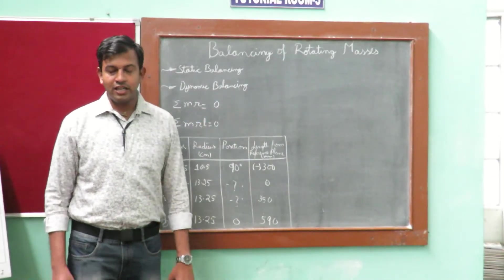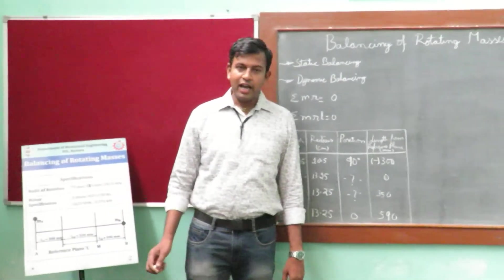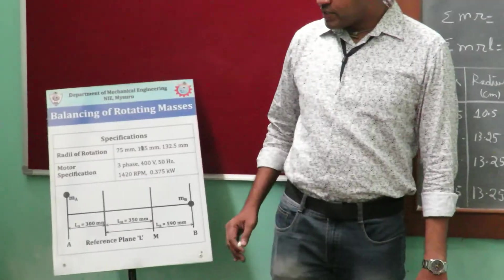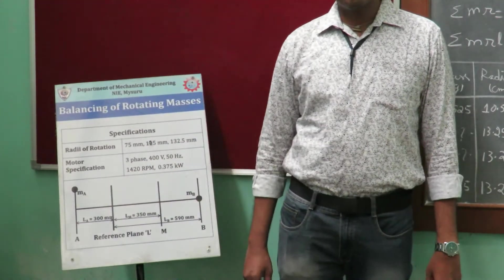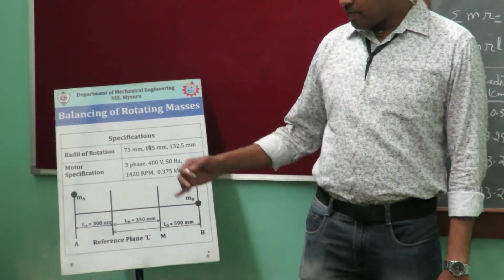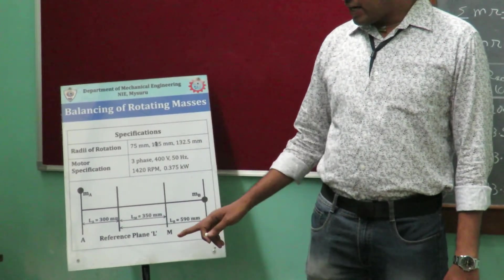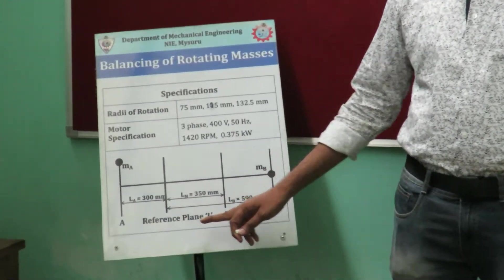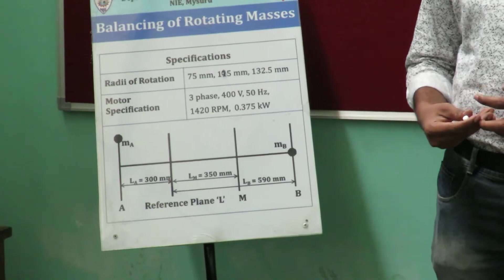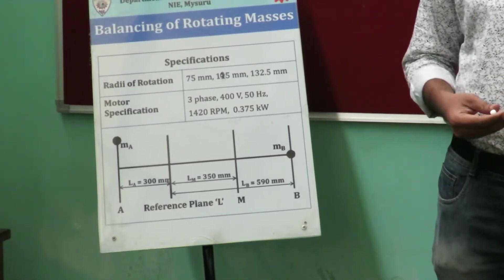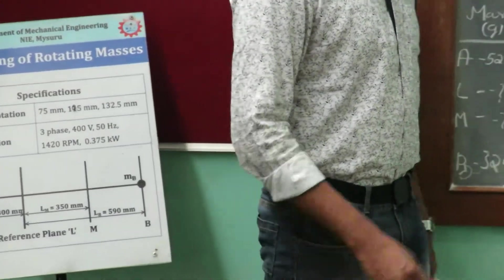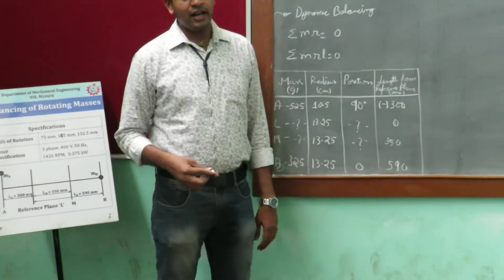As you can see in the experiment setup, we have two known masses MA and MB which are placed in different planes. We will balance the unbalanced force and unbalanced moment generated by these two masses by adding two masses at plane L and plane M. The combination of these two masses will balance the unbalanced force and moment generated by the two rotating masses. This is the theory behind the experiment.